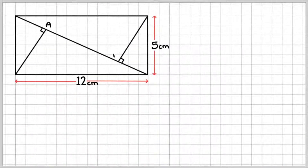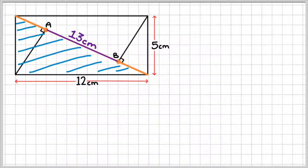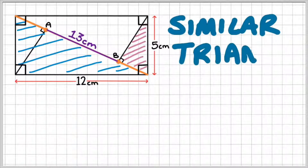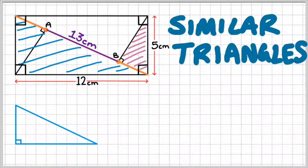Now that we know the diagonal of the rectangle is 13 centimeters, we can start working out these small lengths from A to the vertex and B to this vertex. Let's consider this large triangle, this blue one, and compare it to this small triangle, this pink one. Before we move on, let's identify that this is a rectangle by indicating the right angles at each vertex. We're going to use similar triangles to identify the side length ratio between the big triangle and this smaller triangle, so let's draw out the two right angle triangles.